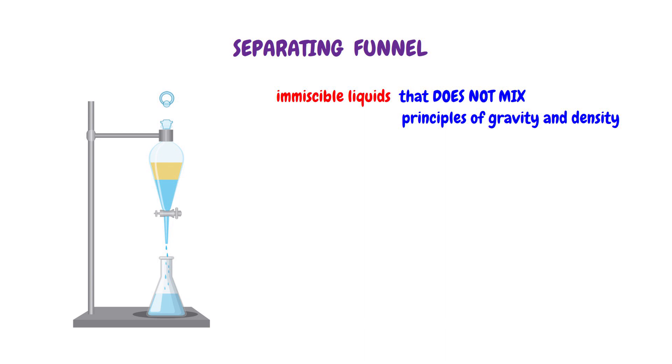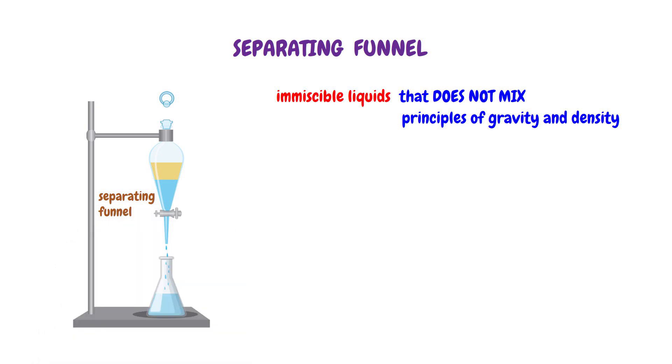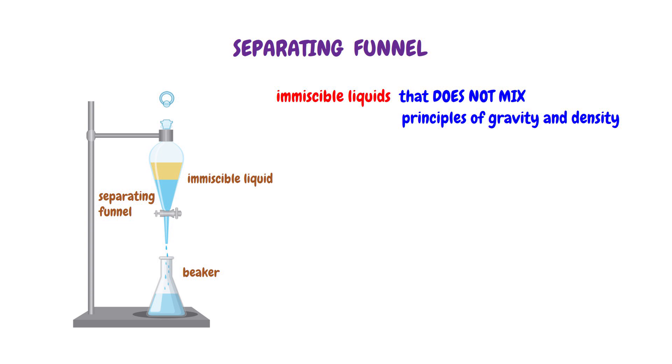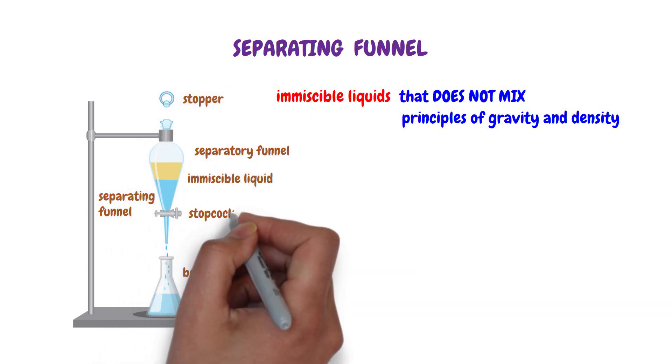The separating funnel technique consists of a separating funnel, the immiscible liquid to be separated, and the beaker for collecting the liquid. The parts of the funnel include the stopper, separatory funnel, and the stopcock.